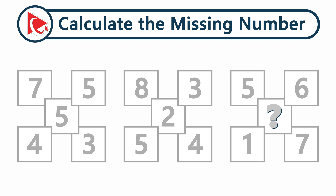The first shape has number five in the middle and numbers five, three, four, and seven on the outside. The second shape has numbers three, four, five, and eight on the outside and number two in the middle. The third shape has numbers six, seven, one, and five on the outside and a missing number in the middle, which you need to calculate.